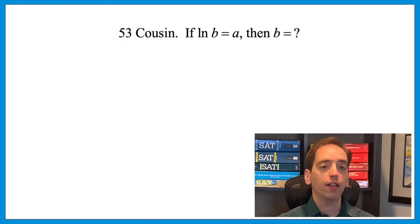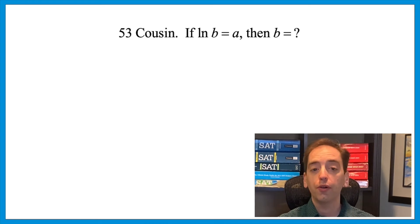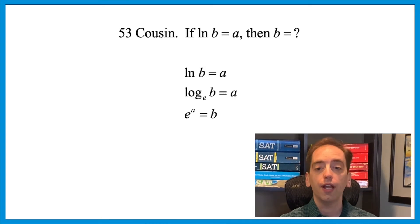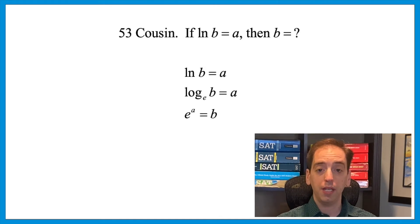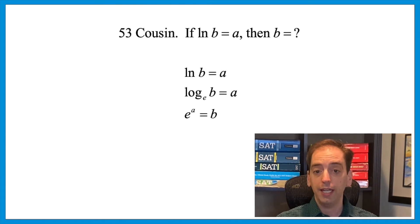When comparing two ratios, make sure the common variable is the same. Now let's look at cousins of questions 53 and 56 — they look more complicated than they are. Question 53: if ln(b) = a, then b equals what? This just requires knowing a specific rule: 'ln' means log with a base of e. So rewrite it as log base e of b equals a, and by the law of logarithms, e to the power of a equals b. So b = e^a. Question 53 from December does the same thing with different numbers — no serious computation, just a specific math rule.